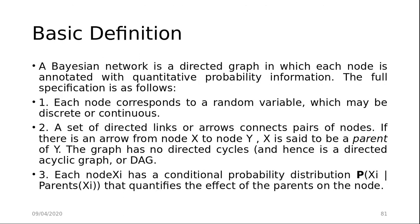Basic definition: A Bayesian Network is a directed graph in which each node is annotated with quantitative probability information. The full specification is as follows. First, each node corresponds to a random variable which may be discrete or continuous. Second, a set of directed links or arrows connects pairs of nodes. If there is an arrow from node X to node Y, then X is said to be a parent of Y. The graph has no directed cycle and hence is a directed acyclic graph or DAG. Third, each node X has a conditional probability distribution P(Xi | parents(Xi)) that quantifies the effect of the parents on the node.